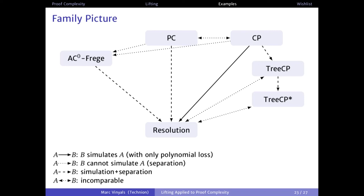In the proof system picture, this gives us a new proof system: tree-like CP-star, meaning tree-like cutting planes with polynomially large coefficients — or logarithmically representable coefficients. We now know that normal tree-like cutting planes is strictly stronger than tree-like cutting planes with small coefficients. There is a caveat: we only know this lower bound result for the semantic cutting planes proof system.